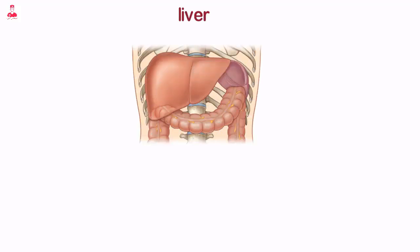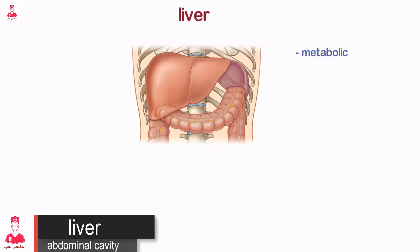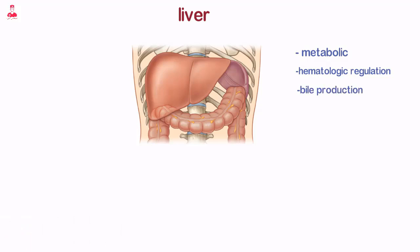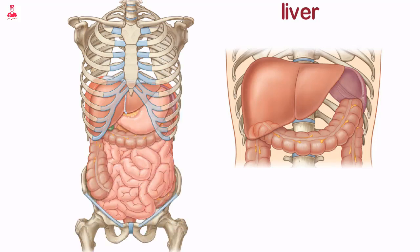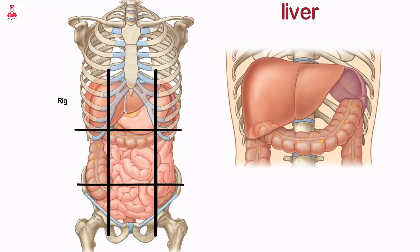The liver is a large complex organ with numerous functions, which include metabolic and hematologic regulation and bile production. It is the largest organ of the abdomen, occupying a major portion of the right hypochondriac and epigastric regions, sometimes extending into the left hypochondriac and umbilical regions.